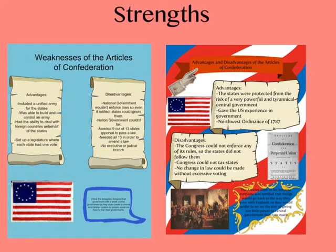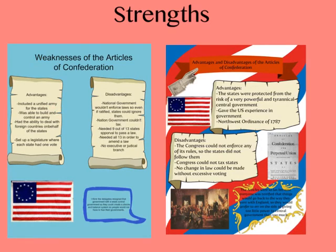A lot of folks who study history talk about the Articles of Confederation as basically one giant epic fail — we made them, had them for a while, realized they weren't working, scrapped them, and got the Constitution, which is what we still have now. But there were some good things about the Articles. Looking at the advantages: it included a unified army for the states, enabling them to come together and build an army as a nation. They had the ability to deal with foreign countries as one voice, and they set up a legislature where each state had one vote — equal opportunity.